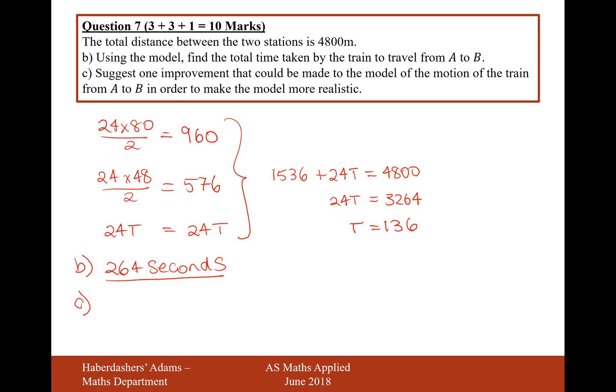Good, moving on to part C, suggest one improvement that could be made to make the model of the motion of the train from A to B more realistic. Well, it's probably likely to have more varied acceleration. The acceleration at the start and at the finish is more likely to be more curvy than just constant acceleration. So the acceleration is likely to not be constant.